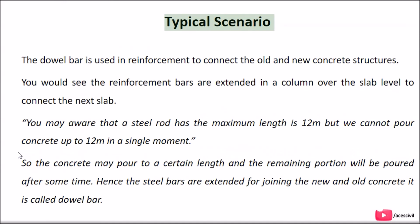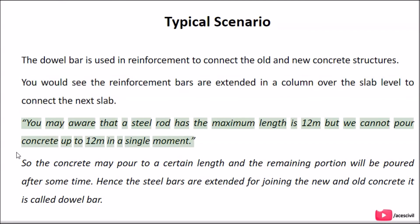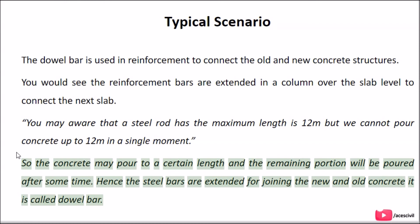Typical scenario: The dowel bar is used in reinforcement to connect old and new concrete structures. You would see reinforcement bars extended in a column over the slab level to connect the next slab. A steel rod has a maximum length of 12 meters, but we cannot pour concrete up to 12 meters in a single operation. So concrete may be poured to a certain length and the remaining portion poured after some time. Hence the steel bars are extended for joining new and old concrete — this is called a dowel bar.